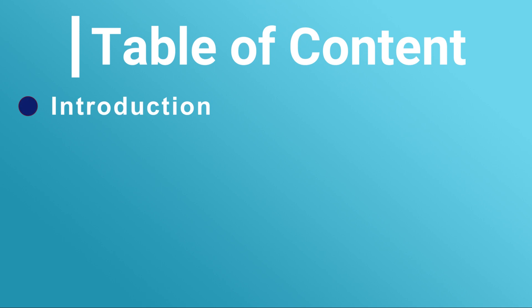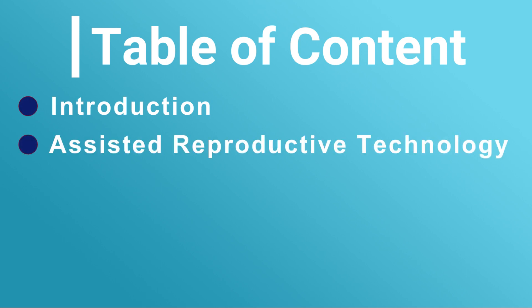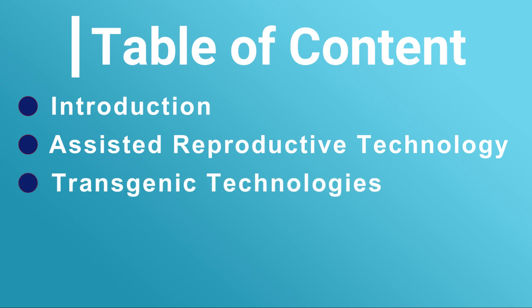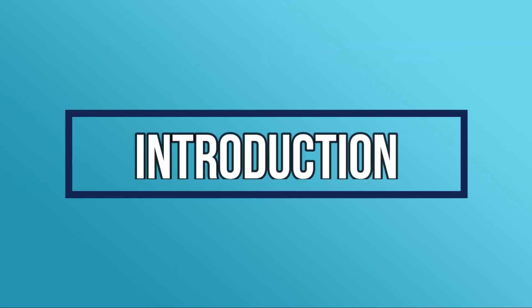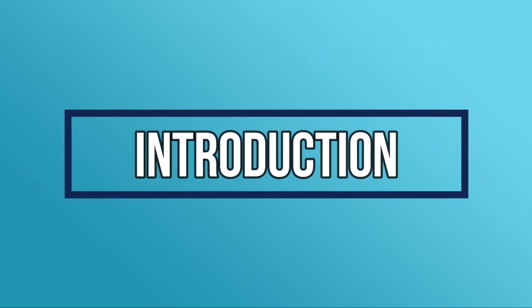Let's begin with the table of content. First we will have a brief introduction about animal biotechnology, then we will learn about assisted reproductive technology, and at the end we will learn about transgenic technologies in animals for food and other products.